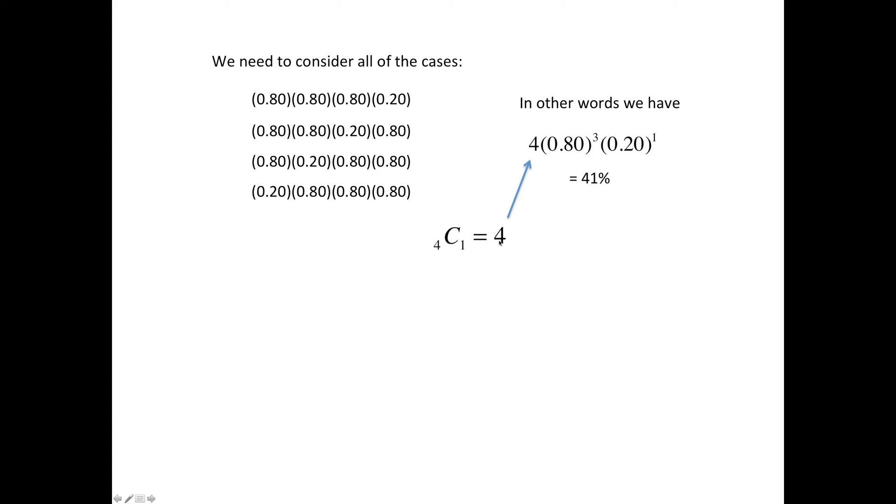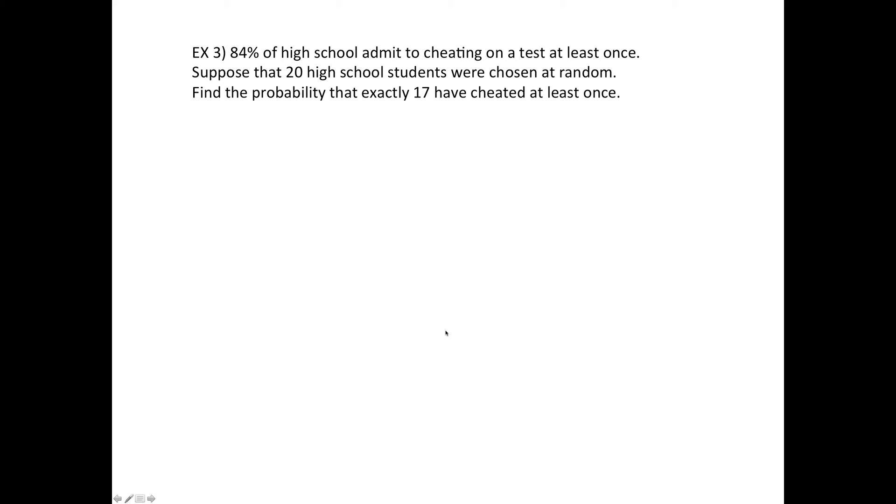So finally, what we have right here, what we've developed is called the binomial formula. So that four in front, that comes from combinations. Then you take the chances of success and raise it to however many successes you want. Then this is the chances of a failure, and this is how many failures we're going to have.